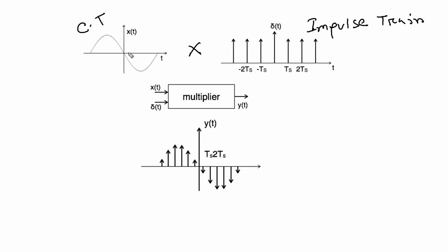So what does the discrete time signal do? At positions 1, 2, 3, 4, 5, 6 we can see the values. Then we can change the values. That means this is the main continuous time signal, and the values here represent discrete samples being taken.